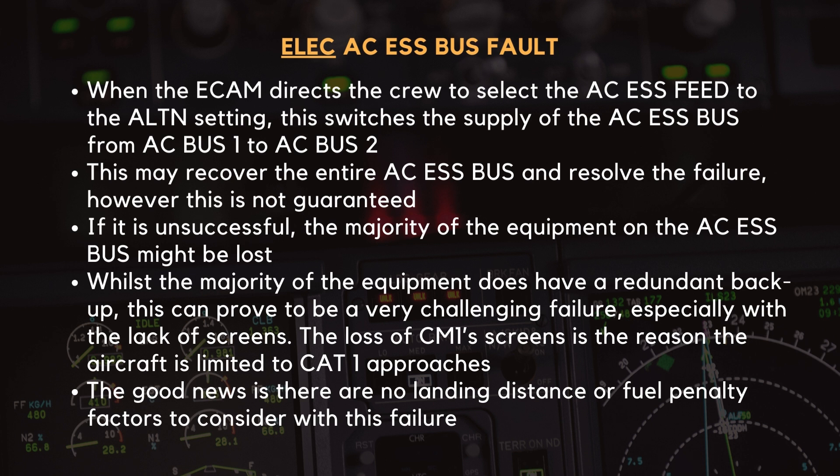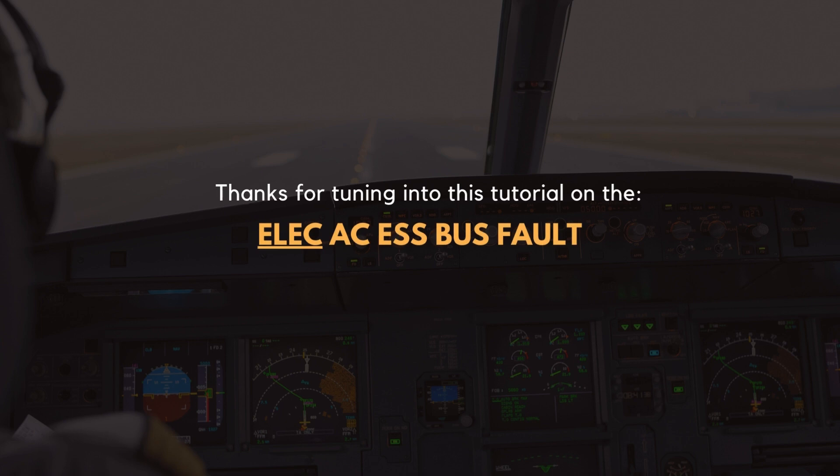The loss of CM1 screens is the reason the aircraft is limited to CAT 1 approaches. The good news is there are no landing distance or fuel penalty factors to consider with this failure. Thanks for tuning in to this tutorial on the AC Essential Bus Fault eCAM procedure.